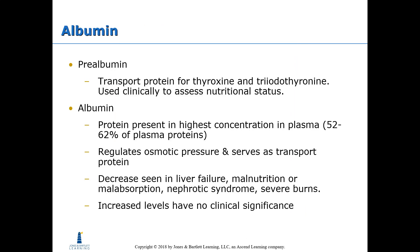Beginning with albumin: prealbumin is a transport protein for thyroxine and triiodothyronine — the thyroid hormones — and is used clinically to assess nutritional status. Albumin is the most predominant plasma protein, comprising 52% to 62% of all plasma proteins. It regulates osmotic pressure, helps retain water in the body, regulates fluid balance, and serves as a transport protein. A decrease in albumin is seen in liver failure, malnutrition or malabsorption diseases, nephrotic syndrome, and severe burns.